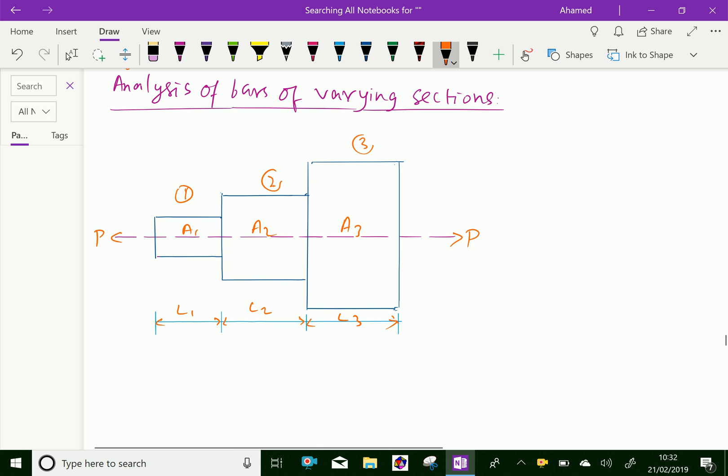Now, each section is subjected to the same axial load P, yet the stresses, strains, and change in length will be different because even though the axial load is the same for each section, the varying cross-sections affect different stress and strain. The total change in length will be obtained by adding the changes in length of individual sections.